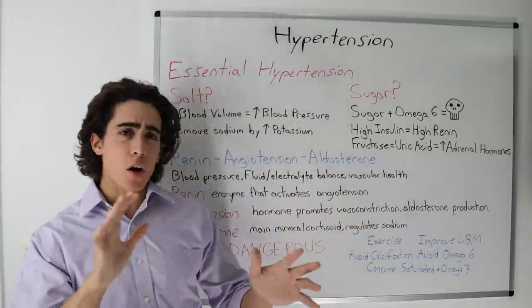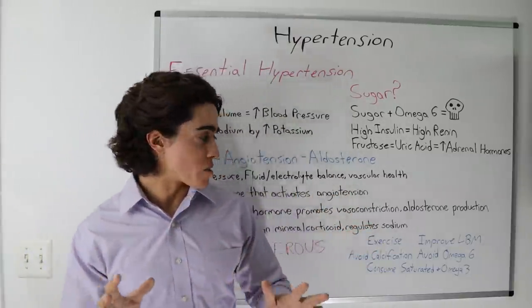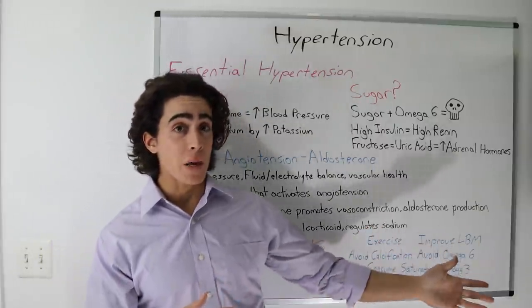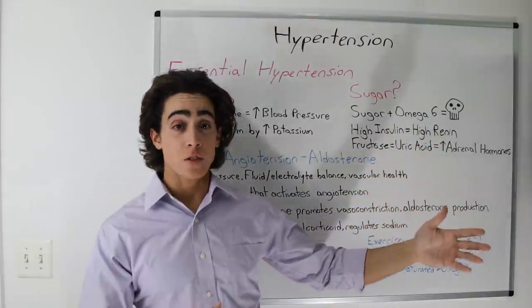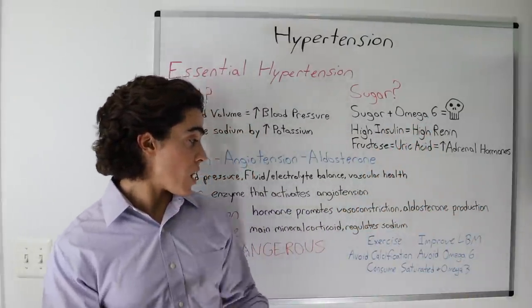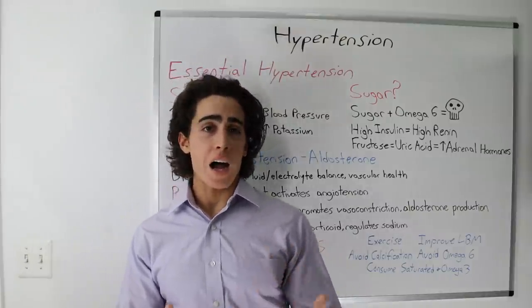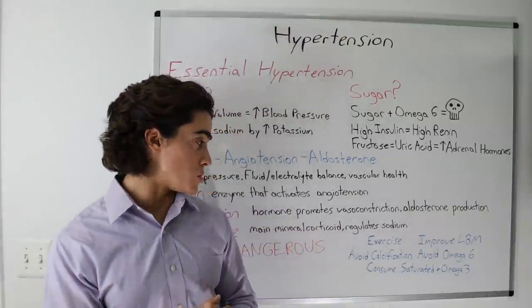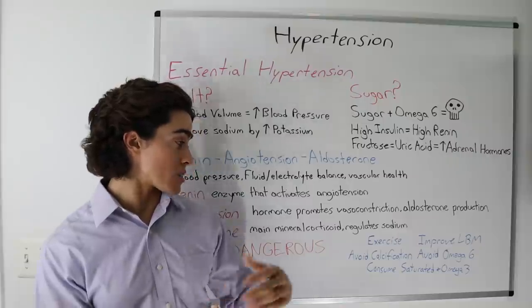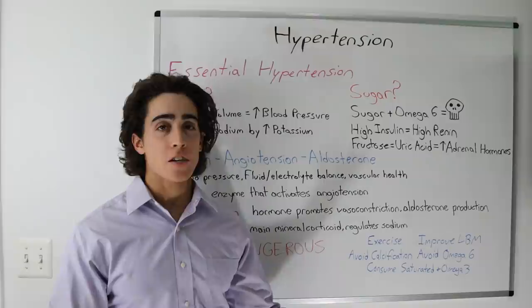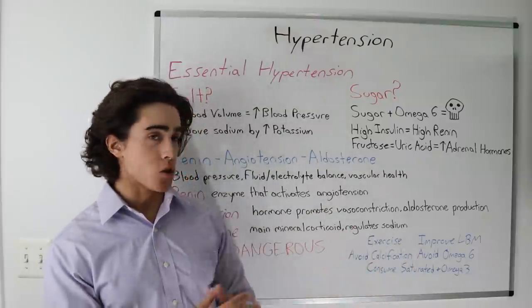So to just briefly go over how to fix high blood pressure, obviously you want to exercise, you want to improve your lean body mass to remove the potential for insulin resistance. You want to avoid calcification as we just said, get plenty of sun, high vitamin K2, fermented animal foods. We said avoid omega-6, linoleic acid, seed oils. And of course you want to consume mostly saturated fats as well as some omega-3 fats.